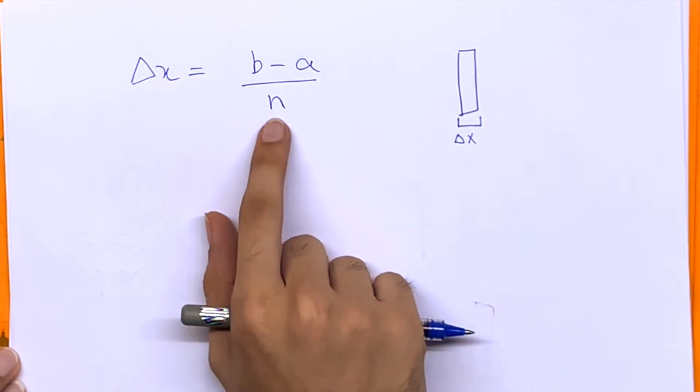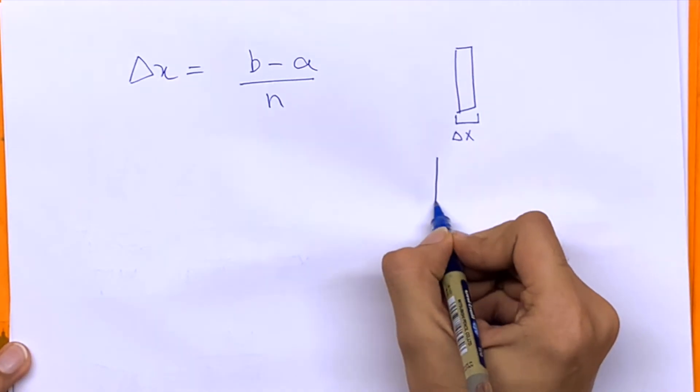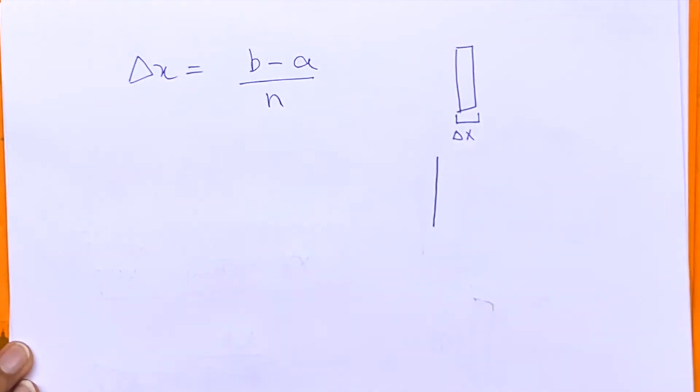So every time we increase the value of n, delta x decreases and the rectangle gets closer and closer to just becoming a straight line or just the height at that very small point.